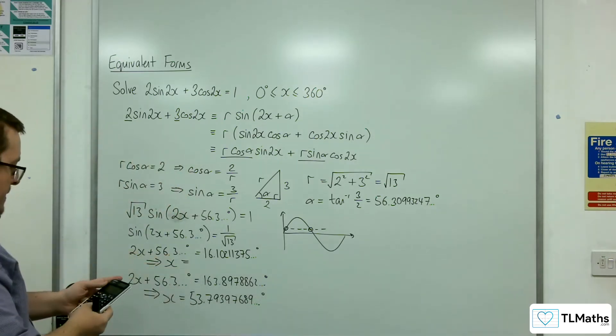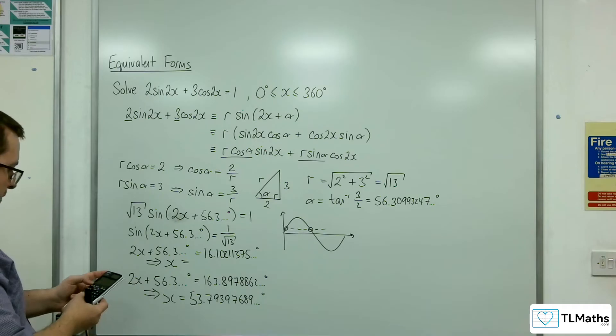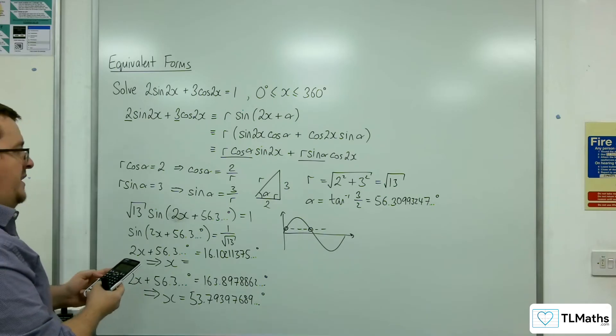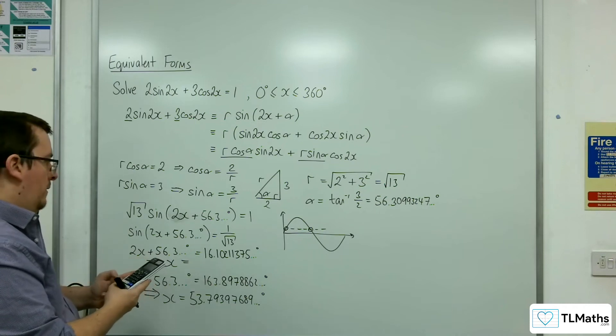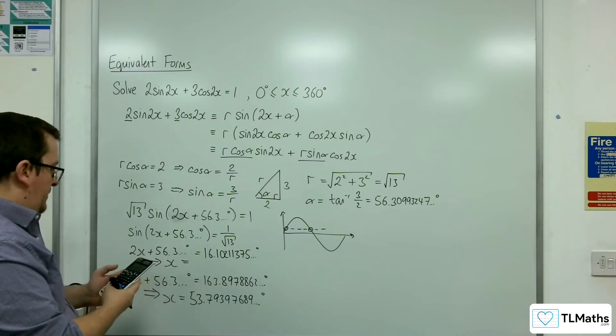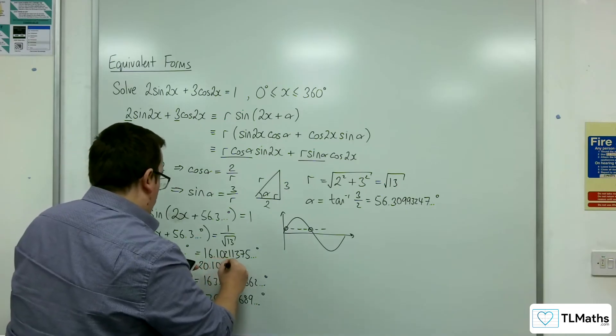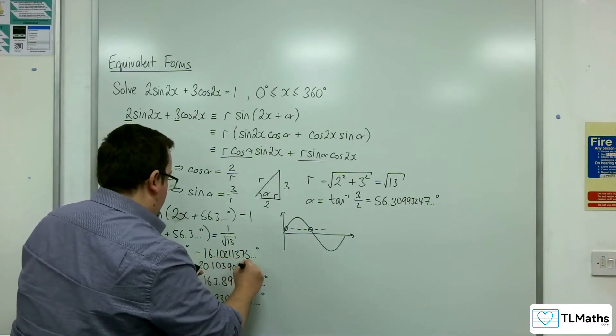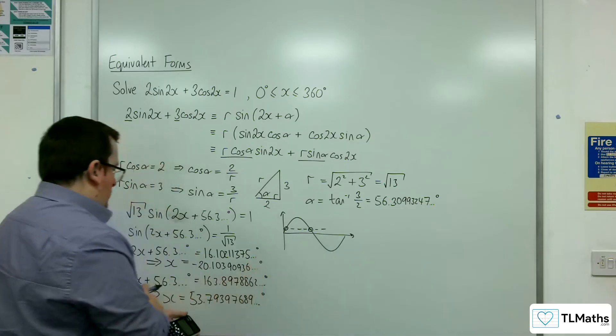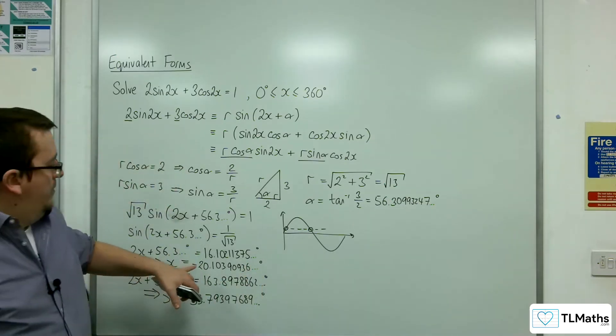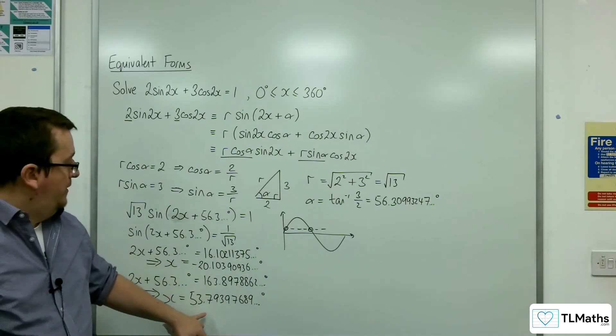For this solution, inverse sine of 1 over root 13, then take away the inverse tan of 3 halves, then divide by 2. We get -20.10390936. So this solution is outside the range; this one is inside.